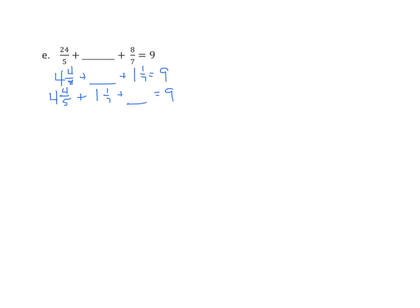We'll find the sum of the whole numbers. I have 5 plus 4 5ths plus 1 7th plus something equals 9. Now we're going to find the sum of these two fractions, so we need to find a common denominator, which is 35. We get 28 35ths plus 5 35ths. I find the sum of those and I get 5 and 33 35ths plus something equals 9.